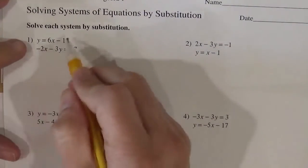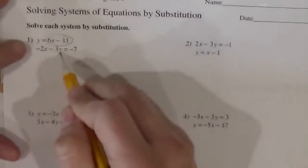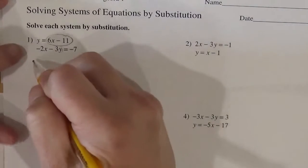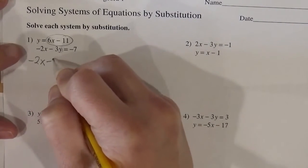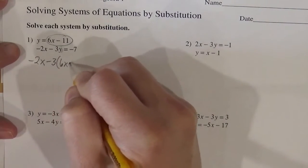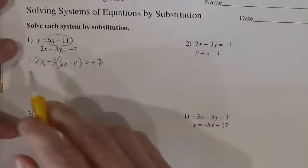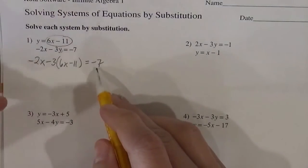So if I know that y equals 6x minus 11, then I can replace this y with what it equals. And the reason I like that, so I'm just going to rewrite this second equation, but instead of writing y, I want to write 6x minus 11, because y equals 6x minus 11. And the reason I like this is because this is one equation with one unknown.